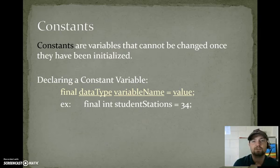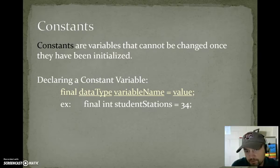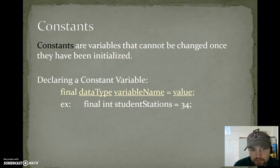Constants. Constants are variables that cannot be changed once they have been initialized. So declaring a constant variable: Final data type variable name equals value. Example, final int student stations equals 34. Now in this example, I have student stations equals 34, and I followed the normal naming conventions for variables. I'm not going to go back and re-record the video, but I will change it. But I will go ahead and ask you to make an additional note. So please make a note.